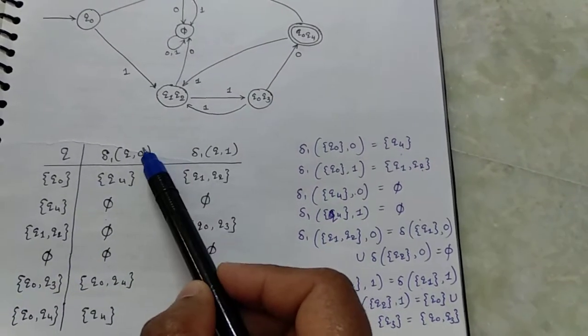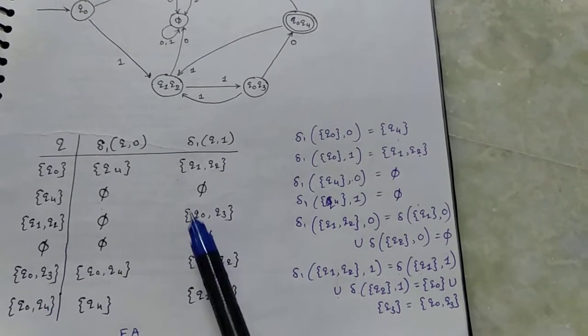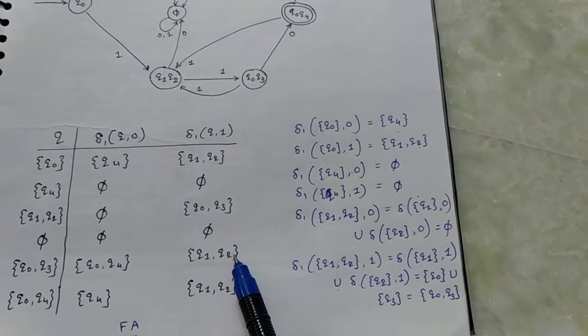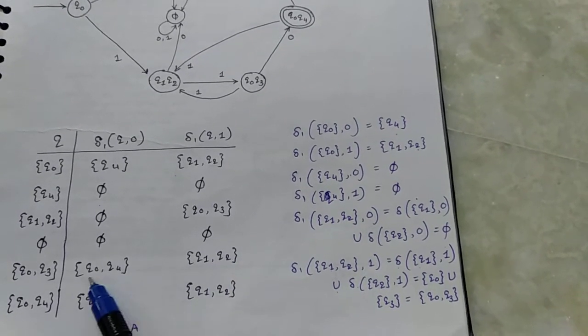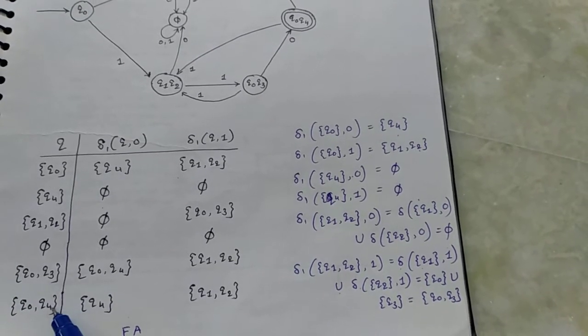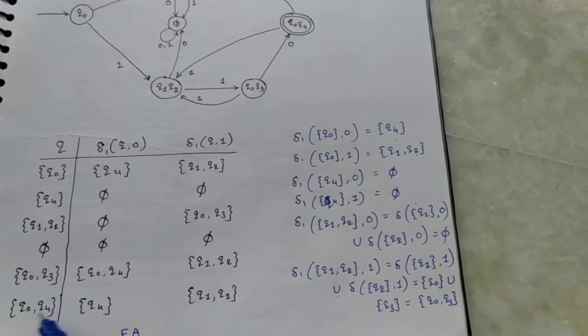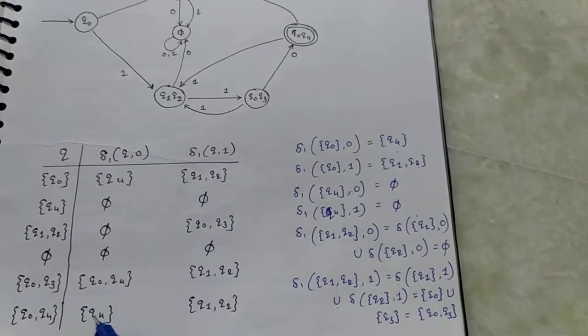Next new state is q0q3. Find q0q3 subset constructions: q0q3 to 0 is q0q4, and q0q3 to 1 is q1q2.